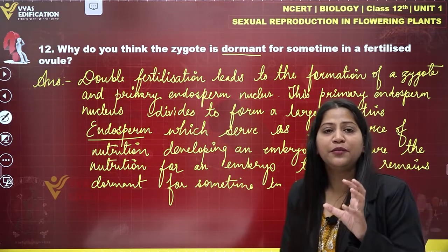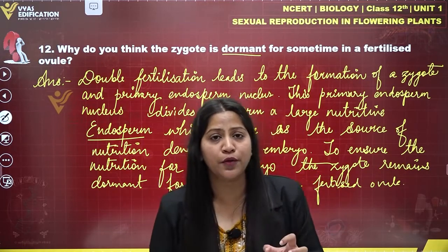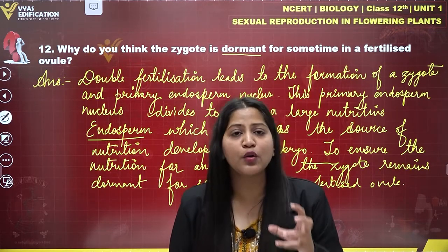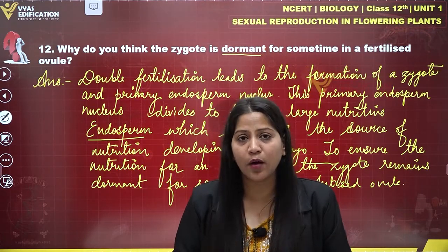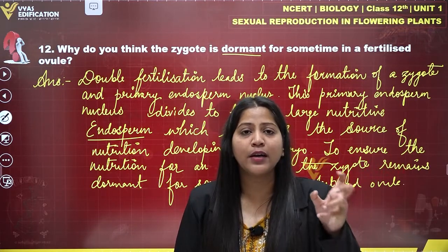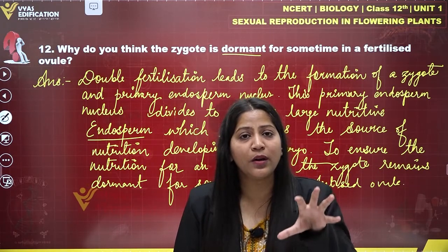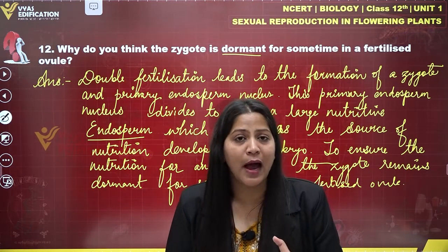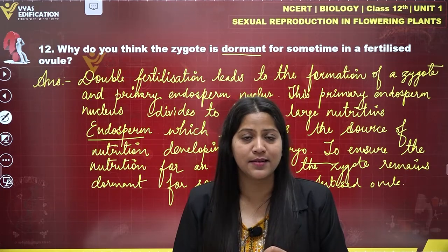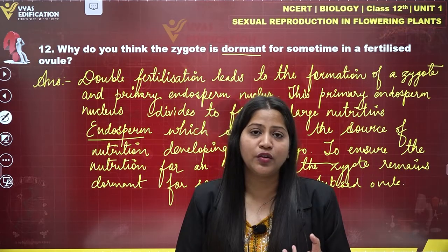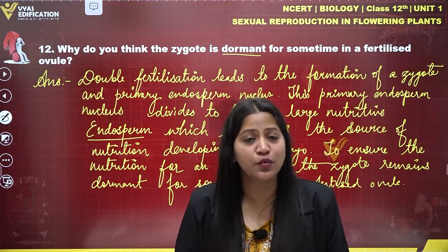When fertilization takes place in angiospermic plants, double fertilization — syngamy and triple fusion — occurs simultaneously inside the embryo sac of a flower. When syngamy occurs, it leads to the formation of a zygote. Soon after becoming a zygote, it will not undergo mitotic divisions to form an embryo right away — it will remain as a zygote for some time, so that the primary endosperm nucleus resulting from triple fusion can divide mitotically to form a large nutritive tissue, ensuring the developing embryo has sufficient nutrition from the endosperm.